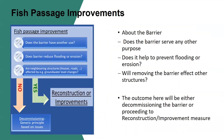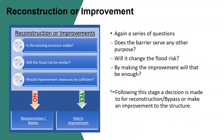On the other side, we have the fish passage improvement box, where we ask a series of questions on the barrier itself and its function. These will determine if we decommission the structure or proceed to further considerations. The questions are: does the barrier have another use? Does the barrier help to prevent flooding or erosion? And does the barrier affect neighbouring structures? This relates to the situation where a barrier holds water and removing the impounded water may have an effect on adjacent foundations. If decommissioning is not an option, then we proceed to the reconstruction or improvement box, where questions on structure stability, flooding and improvement measures help us decide if we reconstruct or implement an improvement measure.